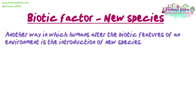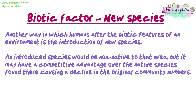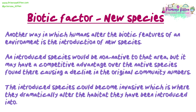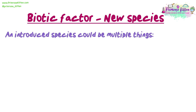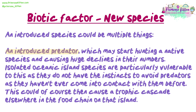Another way humans alter the biotic features of an environment is the introduction of new species. An introduced species would be non-native to the area but may have a competitive advantage over native species, causing a decline in the original community. The introduced species could become invasive, dramatically altering the habitat. An introduced predator may start hunting a native species and cause huge declines in their numbers. Isolated oceanic island species are particularly vulnerable, as they do not have the instincts to avoid predators — this could then cause a trophic cascade elsewhere in the food chain.